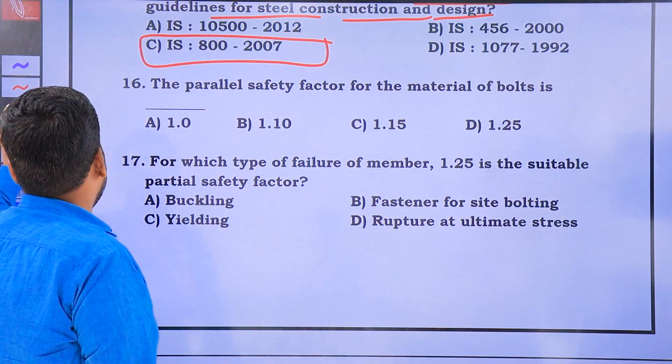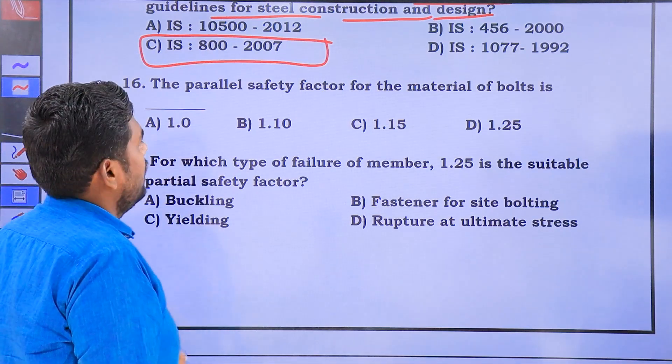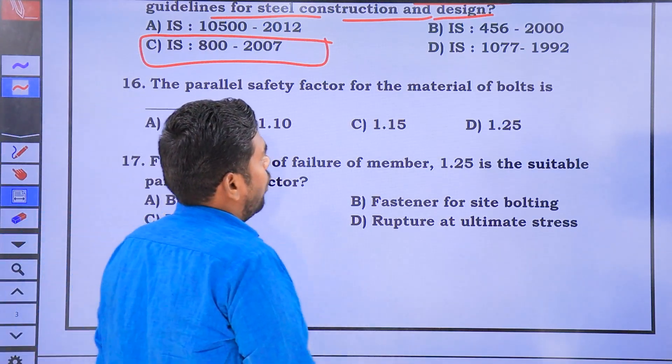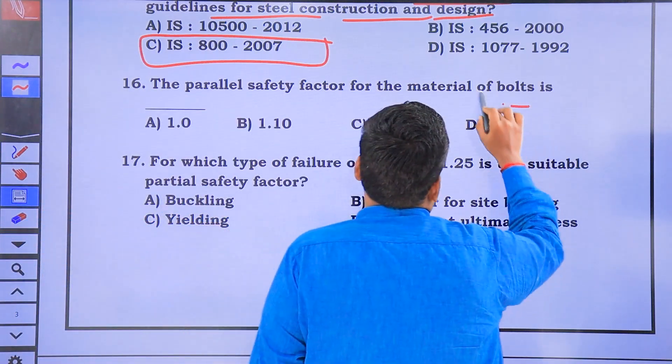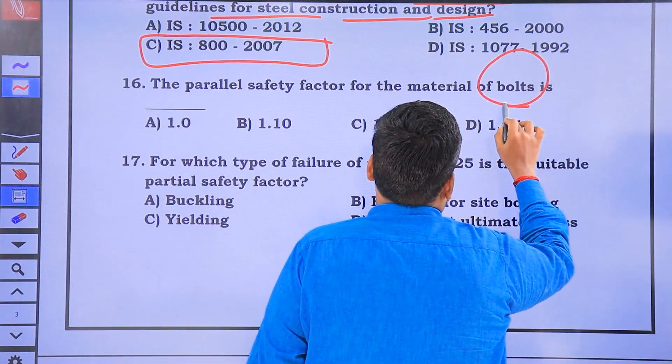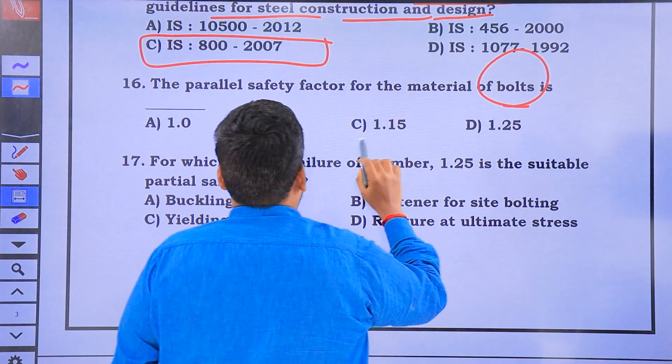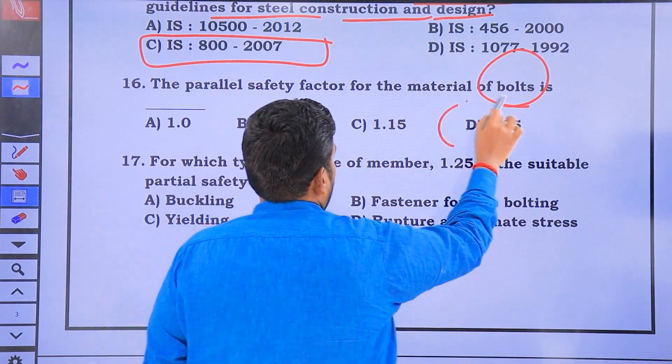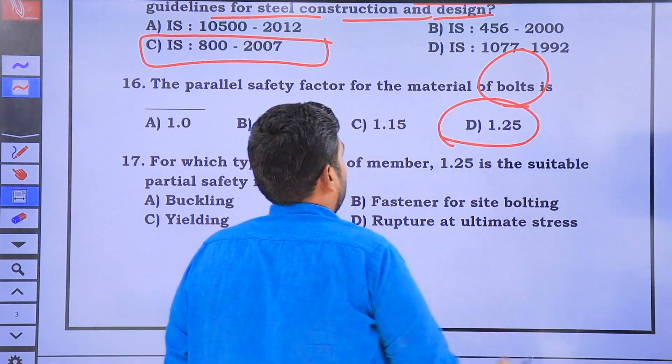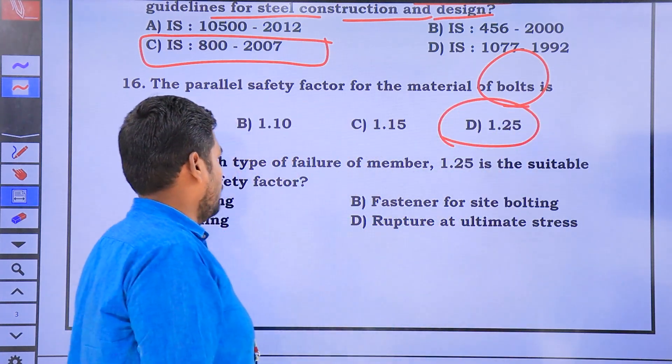The partial factor of safety of a bolt is 1.25.